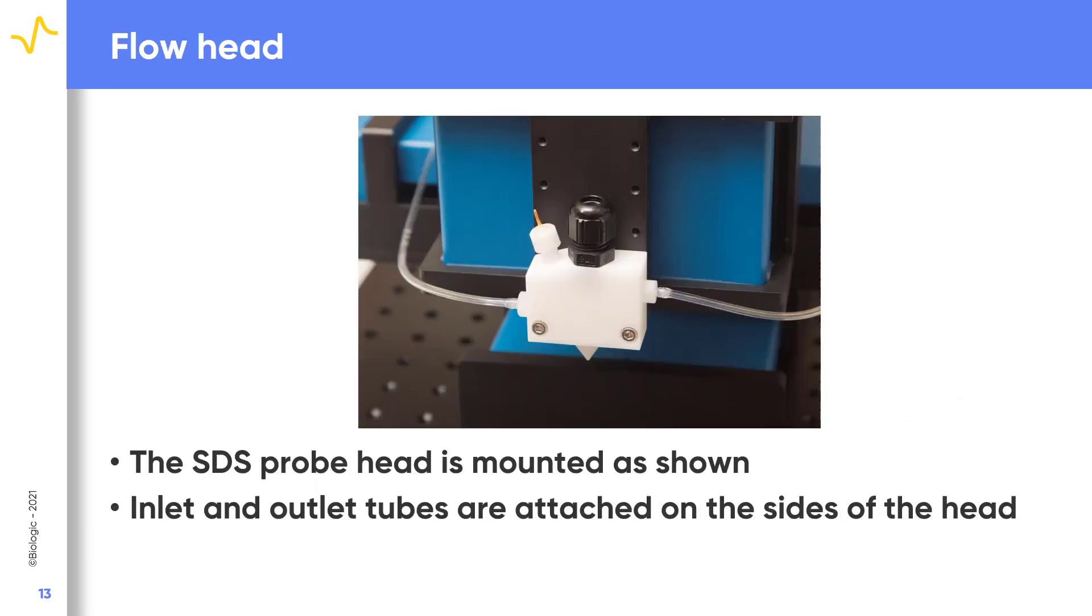As a key component to the SDC experiment, let's take another look at the SDC heads. The flow head supplied with the SDS 470 is shown mounted on the scan head. In this image, we see the inlet and outlet tubes mounted on the head, and the counter electrode is also shown.